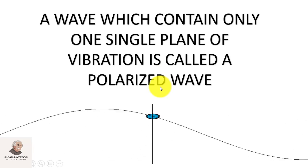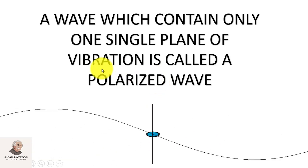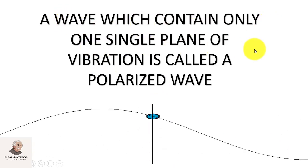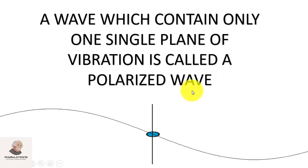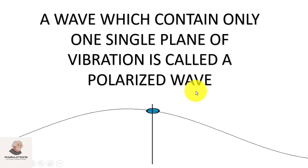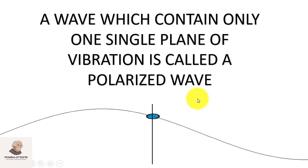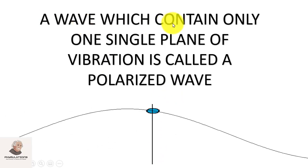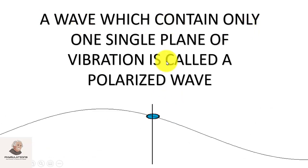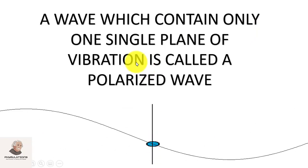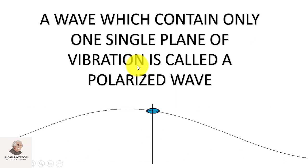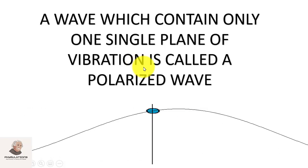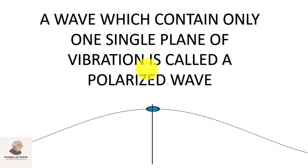So, what will be a polarized light? Stick to this definition: a wave which contains only one single plane of vibration is called a polarized wave. Remember this — one single plane means either it must be a vertical plane of vibration, or a horizontal plane, or any other, but it must be in one dimension.